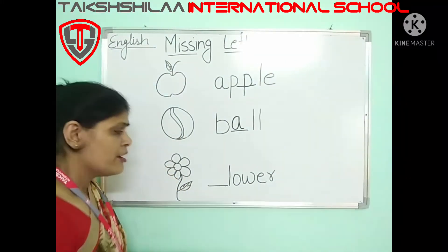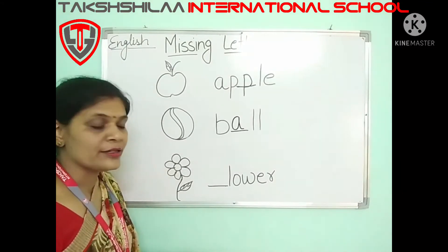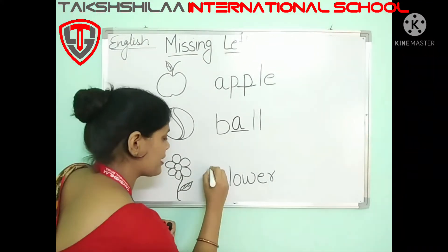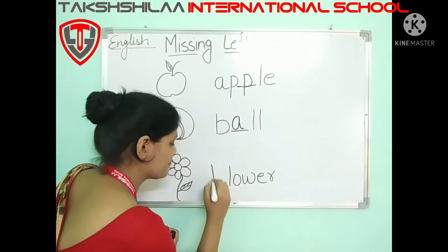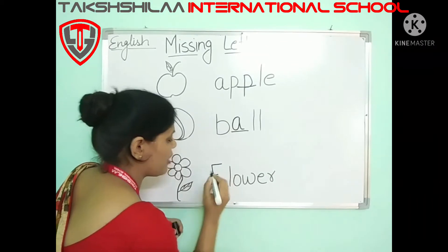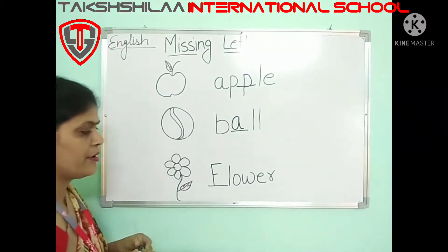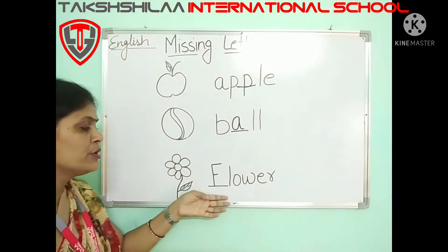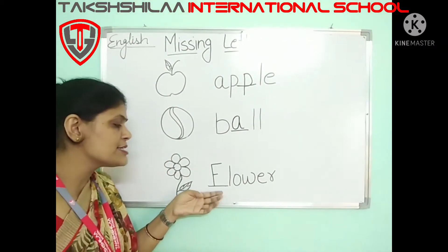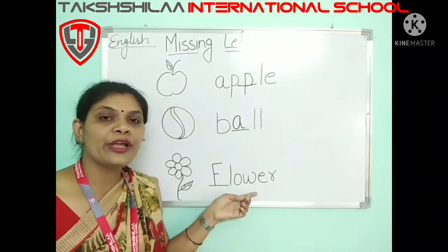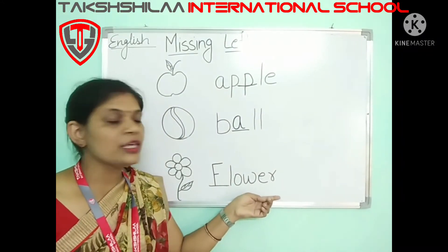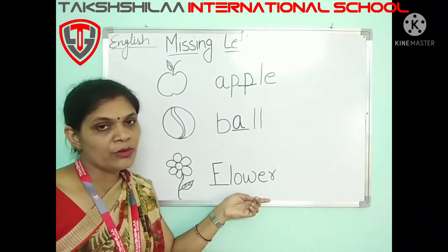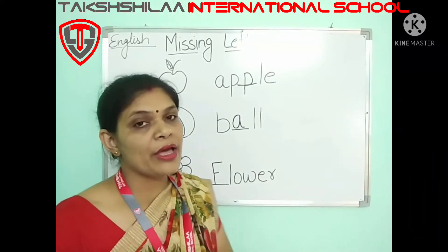But F is missing here. So let's write F. Now the spelling is F, L, O, W, E, R — flower. Okay?